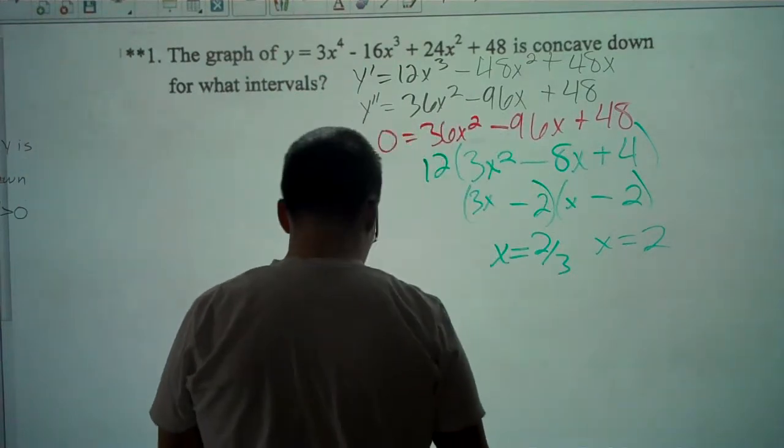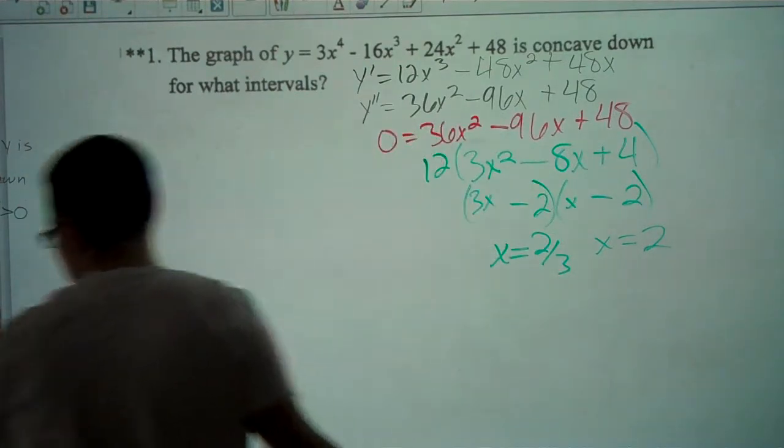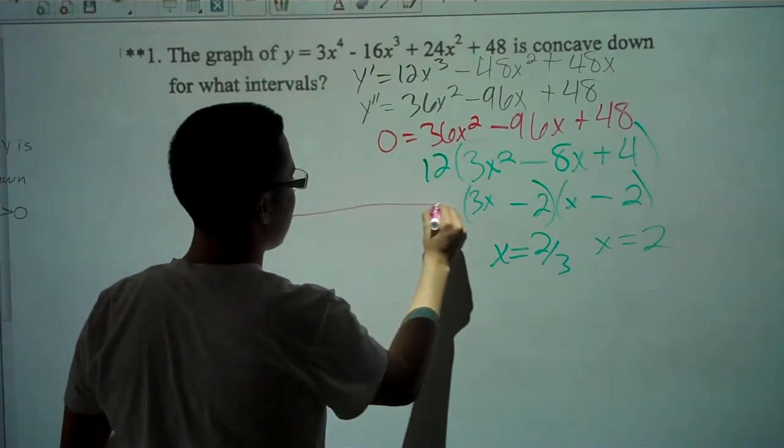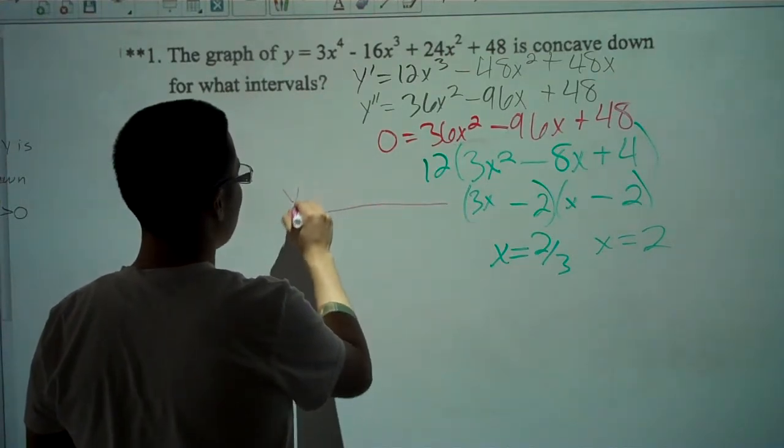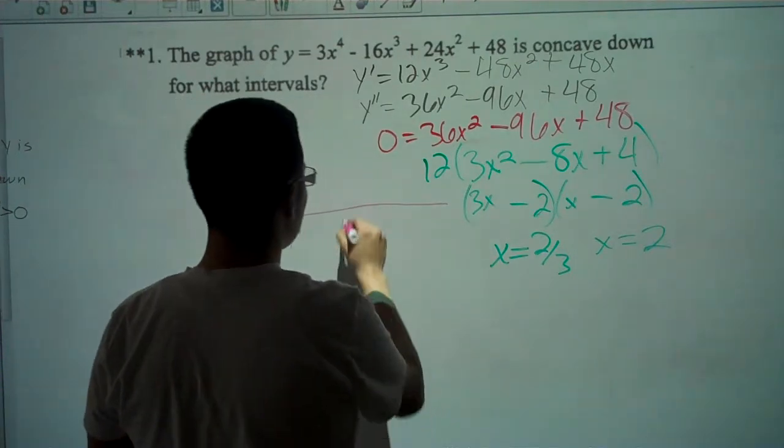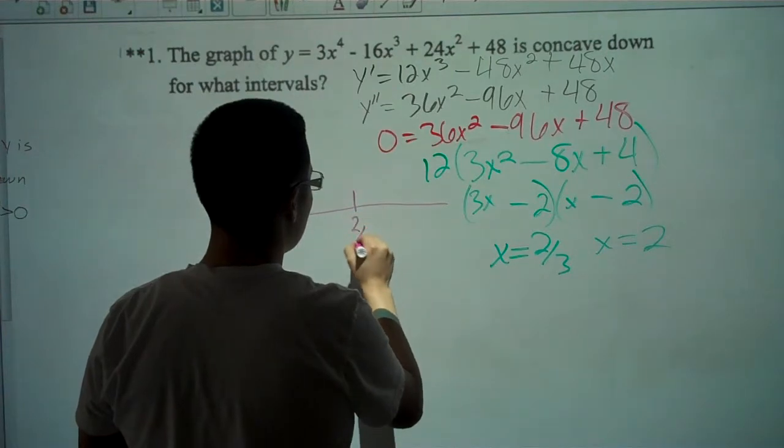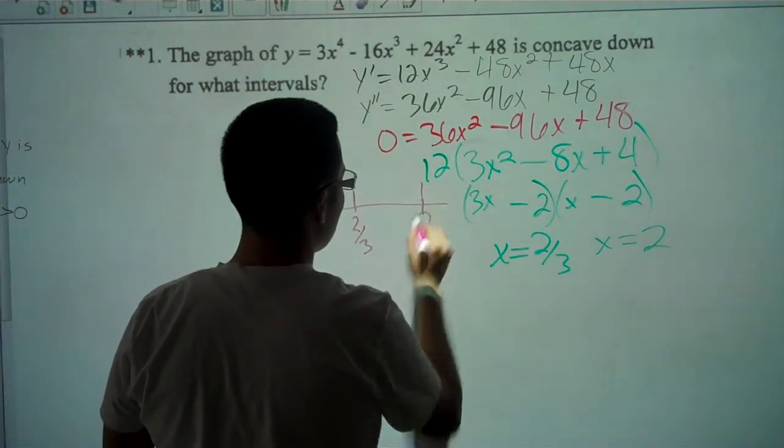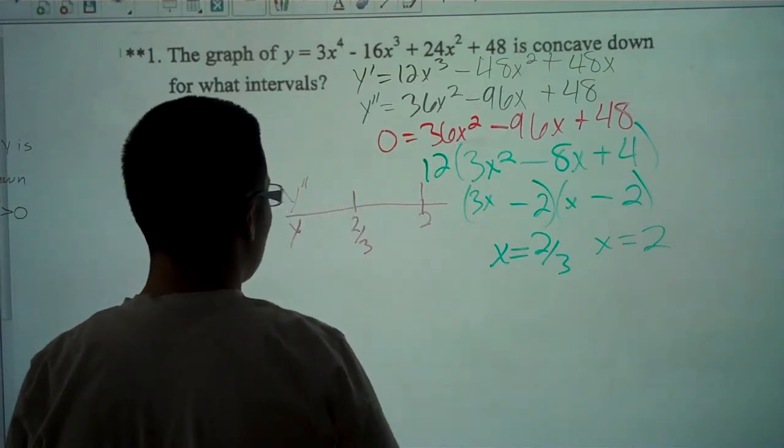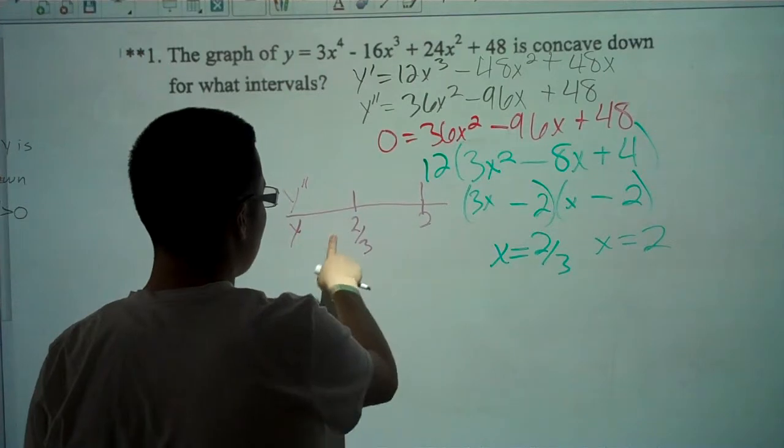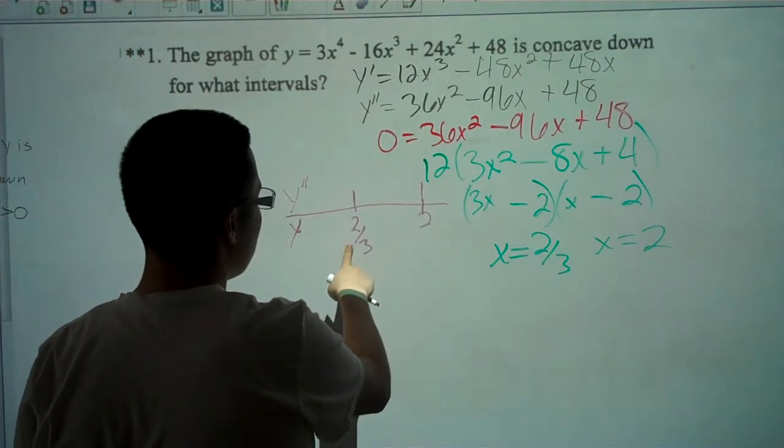Now we have to do our line. Y double prime and y. We're going to put these two points, 2 thirds and 2. And for these we've got to plot a point less than 2 thirds. I'll do zero.